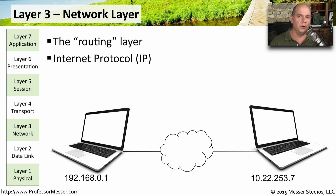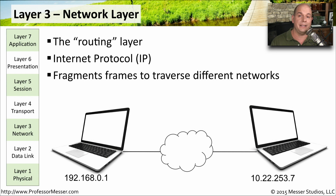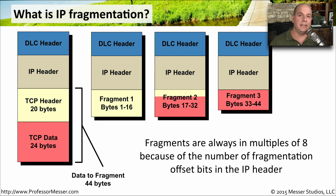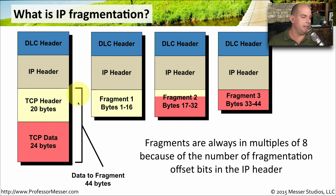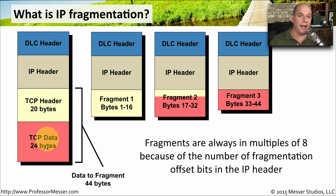Layer 3 is also responsible for taking large amounts of data and fragmenting it into smaller pieces so that it can go through network segments that can't handle those larger frame sizes. For example, the network layer might be sending information with a DLC header and IP header, but if we're going through a connection that can only handle 16 bytes within the IP part of the frame, we fragment — sending the first 16 bytes, then another 16 bytes, then the remaining bytes. On the other side, those fragments are reassembled into the original IP data.